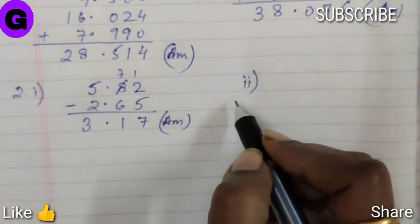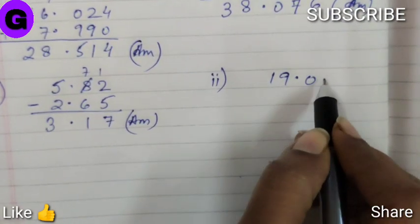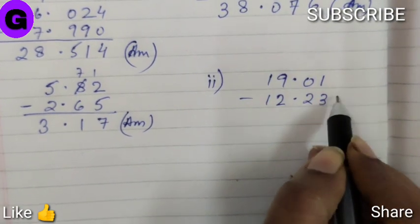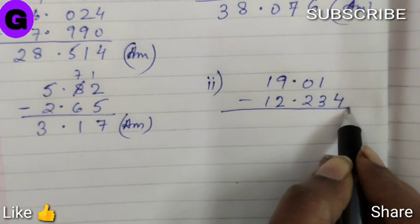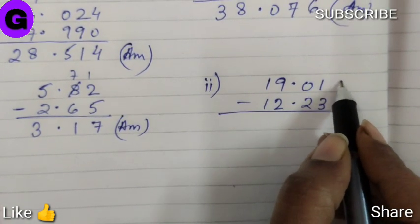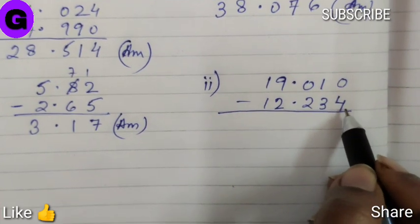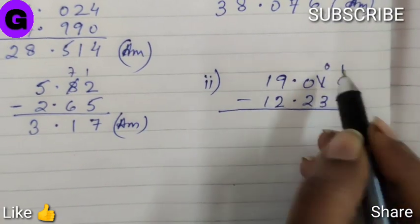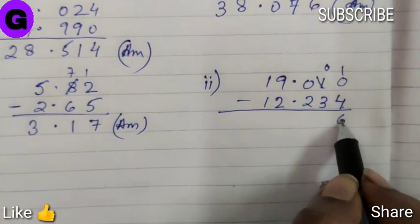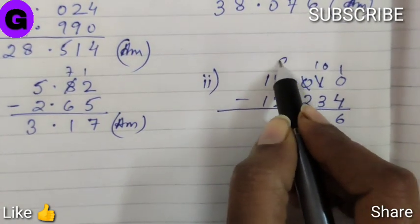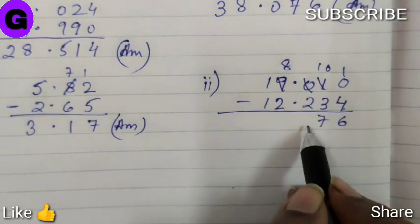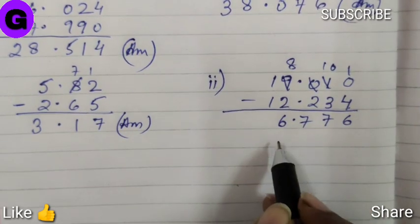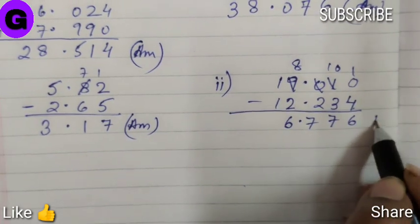Sum number two, it is 19.01 minus 12.234. Now nothing is here, that means it is zero. Now in order to subtract zero from four, which is not possible. So we need to borrow. 6.776 is the answer.